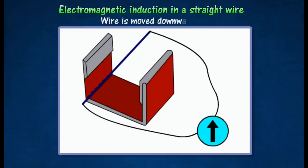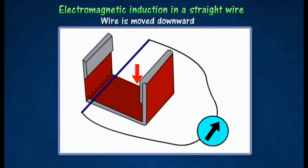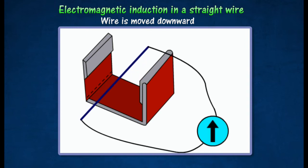When the wire is moved downwards, the galvanometer needle is deflected momentarily, indicating that a current is induced in the straight wire.